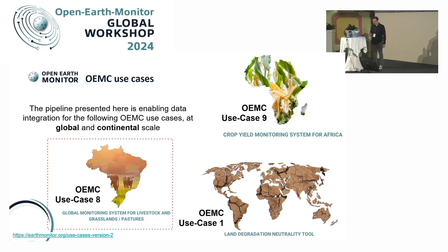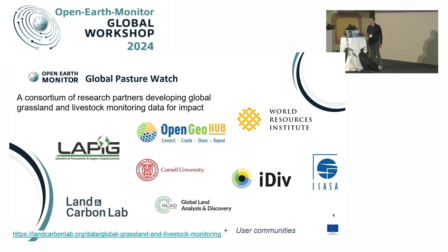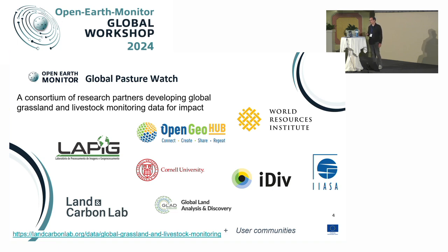Specifically about use case 8 for monitoring grassland, pastures, and livestock: Open Geo Hub is part of the Global Pasture Watch project, a consortium of research partners developing global grassland and livestock monitoring data. IASA is also part of that, together with WRI, LAPIG from the Federal University of Goiás in Brazil, GLAD, IDIV, Cornell University, and this whole initiative is funded by the Land and Carbon Lab.